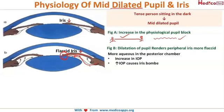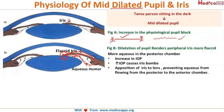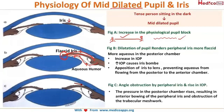When the iris becomes flaccid, it falls and comes in contact with the lens. Aqueous secreted gets collected in the posterior chamber, the intraocular pressure rises, and this condition is called iris bombé — the iris moves forward due to collection of aqueous humor in the posterior chamber. The iris then blocks the angle, causing anterior bowing of the peripheral iris and obstruction of the trabecular meshwork.